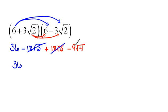Here we have minus 9 times the square root of 4. The square root of 4 is 2. So this now says negative 9 times 2, which is a negative 18. And 36 minus 18 is 18.